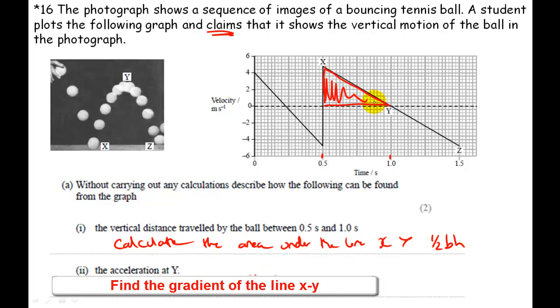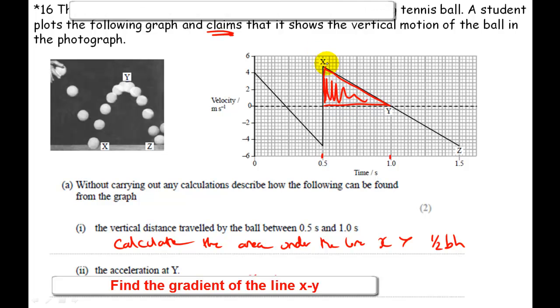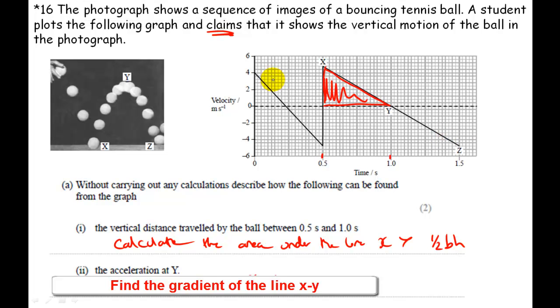Now, things to notice here. It's very easy to lose a mark because you say find the gradient of the line. Because there are many lines on this graph, the examiner doesn't know which line you're talking about. He's not going to give you the mark. You have to say the line X.